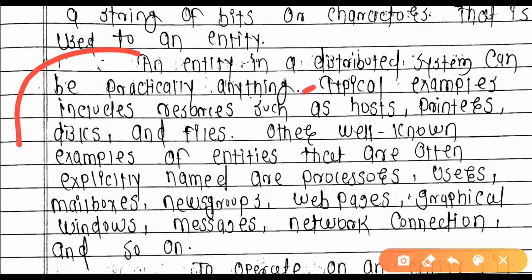Typical examples of entities include resources such as hosts, printers, disks, computers, files, and networks, etc.